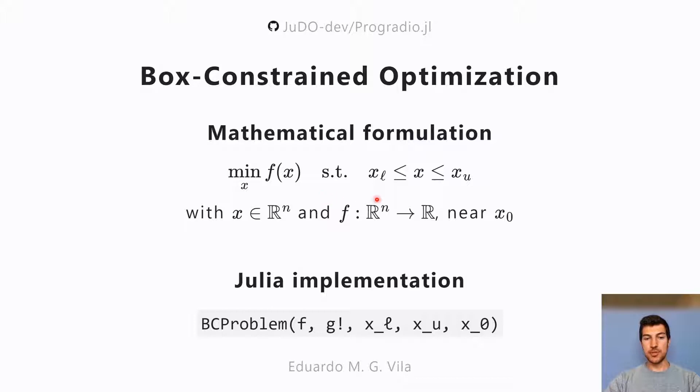This is subject to lower and upper bounds, and we wish to find that minimizer near a provided initial guess x_0.